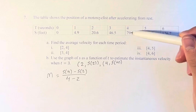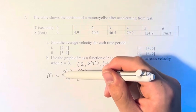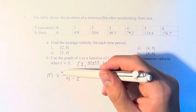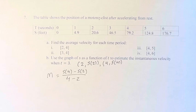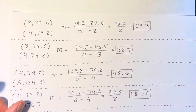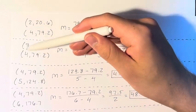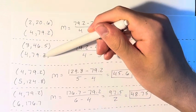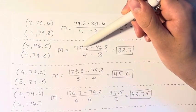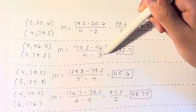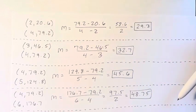For example, s of 4 is 79.2, so we'd be plugging that in. To save us from doing the same calculation over and over again, I've gone ahead and done it ahead of time. For example, for 3 and 4, we take the position at 4 minus the position at 3 divided by 4 minus 3, and that gives us 32.7. You can just pause here if you want to take these values.